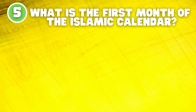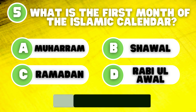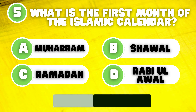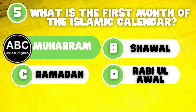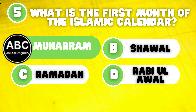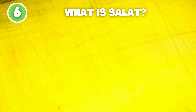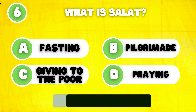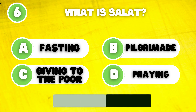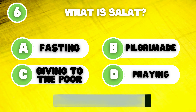What is the first month of the Islamic calendar? The answer is A. What is Salah? The answer is D.